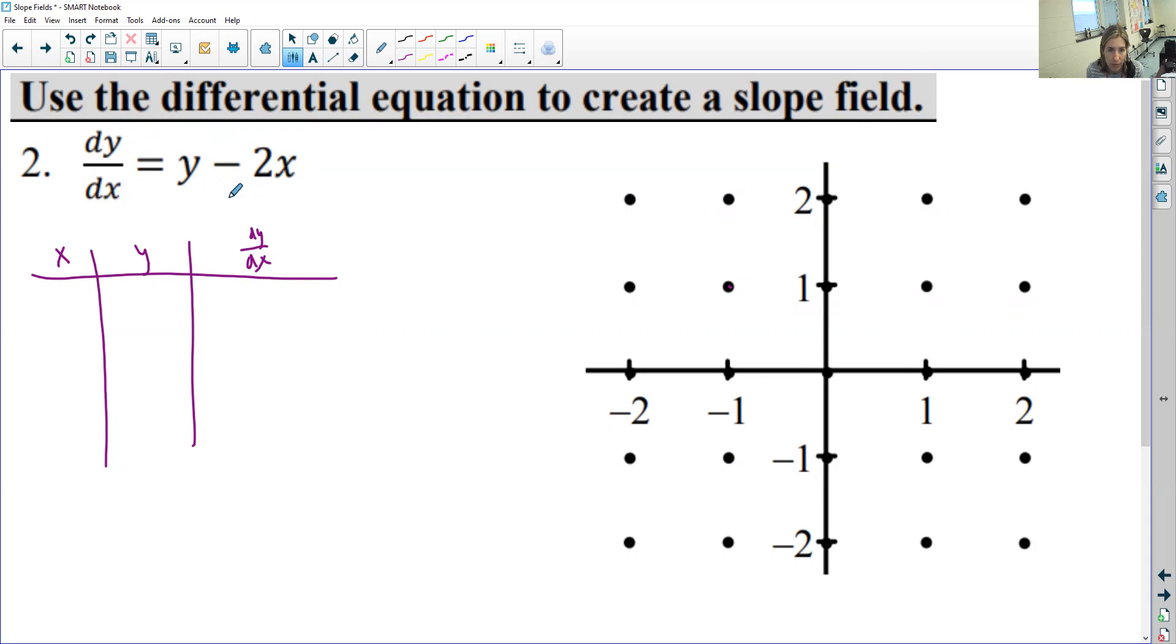Alright, so this is another example of a slope field. So let's just try to make the slope field for the middle 9 points here. If you're going to do that, just set up your little chart with x, y, and then dy/dx, and then just plug the points in.